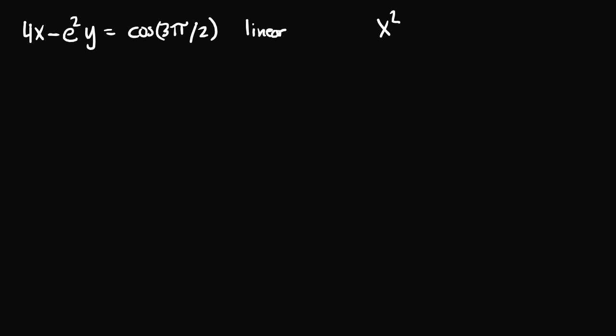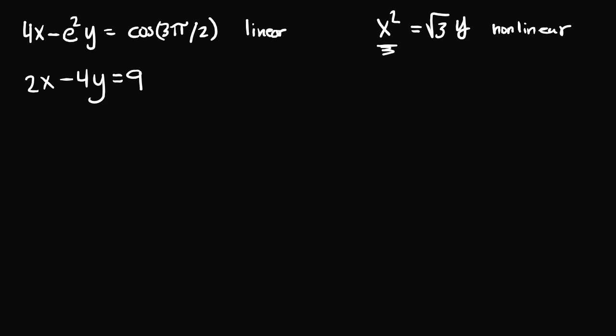How about this equation: x squared is equal to square root of 3 times y? In this equation, we have x raised to some power other than 1, so this makes it nonlinear. What if we had something like 2x minus 4y is equal to 9? This is linear because x and y are the only two unknown variables, they're not multiplied with one another, they're not raised to any power other than 1, and they're not part of any logarithmic, exponential, or trigonometric function.